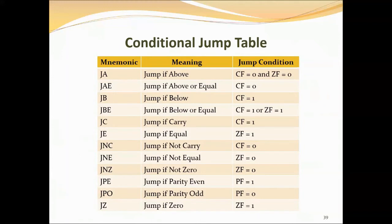JA and JNBE are two mnemonics for the same instruction. Either causes program execution to jump to the label address given in the instruction if CF and ZF are both zero. The 8-bit displacement means the jump must be in the range of minus 128 bytes to plus 127 bytes. These terms are used when considering the magnitude of two unsigned numbers.